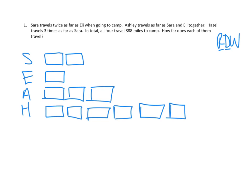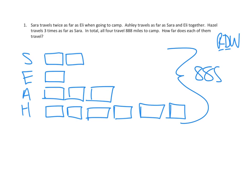So let's see how many of those boxes we have: one, two, three, four, five, six, seven, eight, nine, ten, eleven, twelve. We have twelve boxes. And we're told that in total, this is 888 miles.